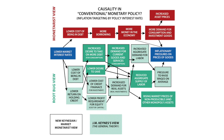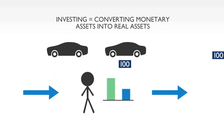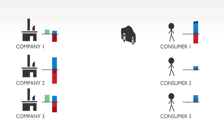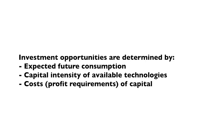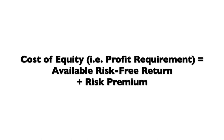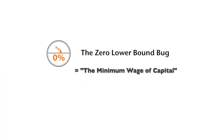Essentially, the interest rate determines the reward for holding monetary savings and the cost of being in debt. These influence the aggregate supply of labour — that is, people's desire to work — and the aggregate demand for labour, determined by the desire to spend and to make real investments. Investing essentially means using work now to make valuable assets that help production in the future. The opportunities available for profitable real investments are determined by expected future consumption, the capital intensity of the technologies available, and the return required for such investments. That required return is strongly affected by the risk-free interest rate — the minimum wage of capital.